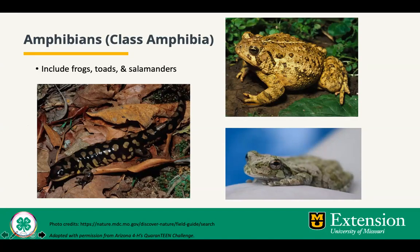First we're going to start with amphibians, or the class Amphibia. Amphibians share certain characteristics with each other. They live both on land and in water, called being amphibious. They breathe with lungs, gills, or through their skin. They are ectothermic or cold-blooded, meaning they have no constant body temperature — their body temperature depends on their surroundings. They have moist, smooth, thin skin with no scales, fur, or hair, and they undergo a metamorphosis, meaning a transformation during their lives. And finally, most lay eggs in water.